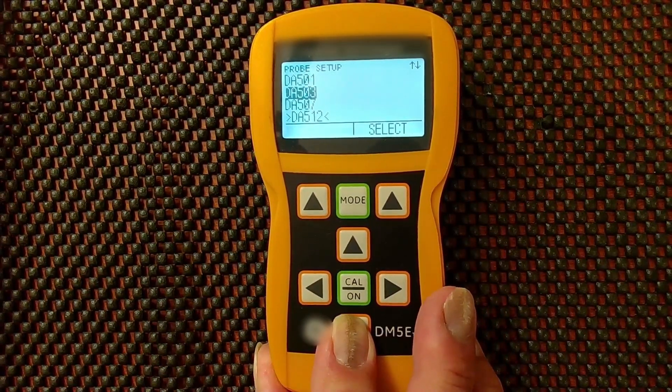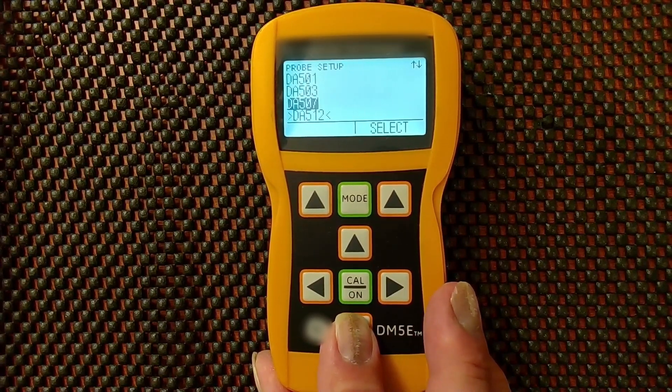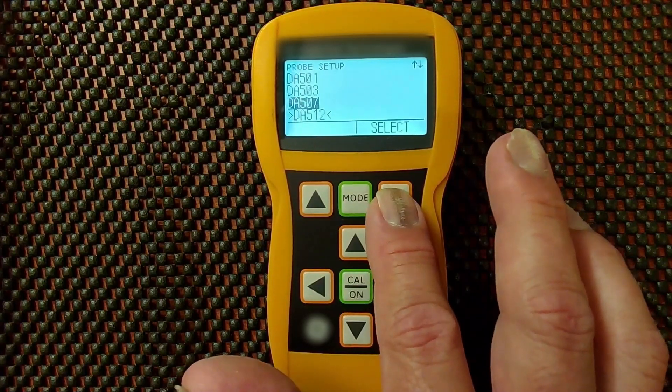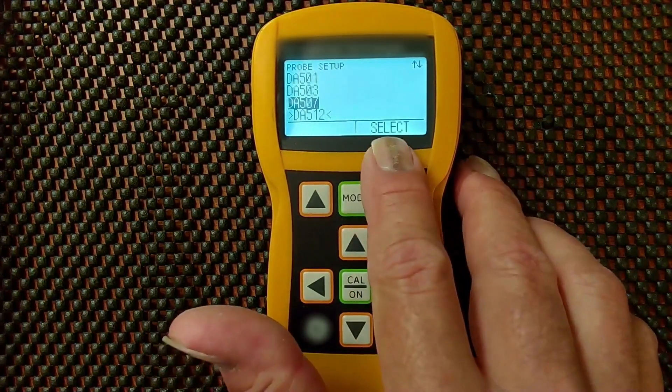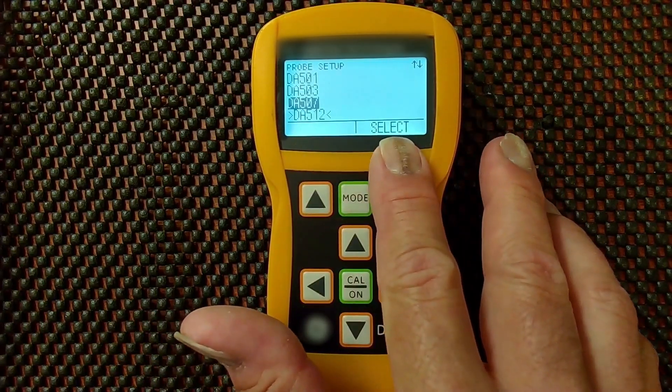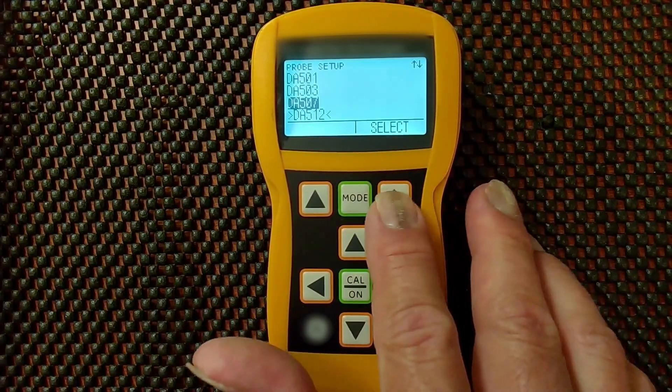When you get to a new probe, let's say we want to select the DA507. The two soft keys at the top of the keypad are underneath menu items on the bottom of the display. We see the select menu item is above this button.